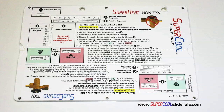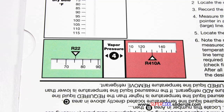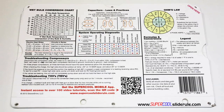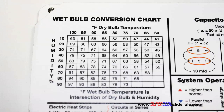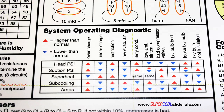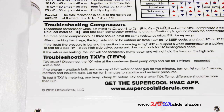Thankfully, those days are gone. This one tool will allow you to charge a system with R22 or R410A in either the superheat or subcooling method. The back cover contains required formulas, capacitor rules and practices, a wet bulb conversion chart, how to perform computations on series or parallel circuits, an electric heat strip guide, a complete system troubleshooting diagnostic chart, and how to troubleshoot compressors and TXV.